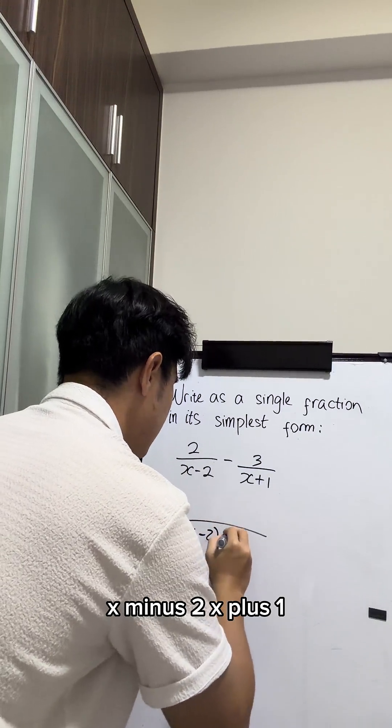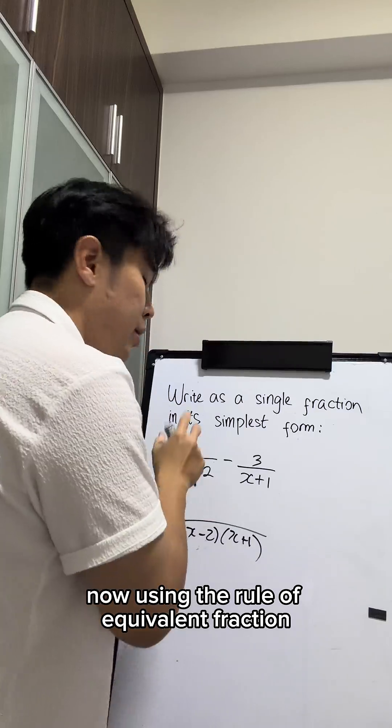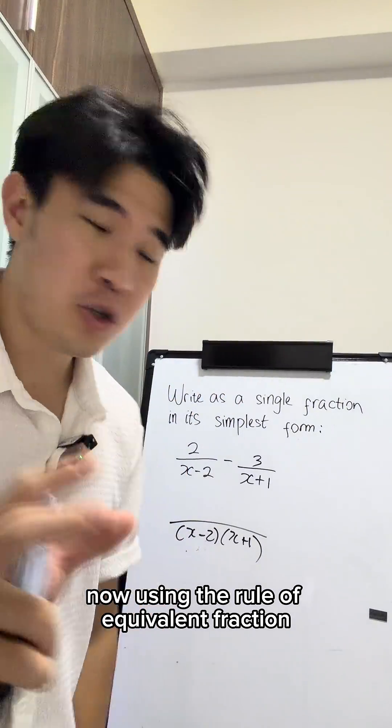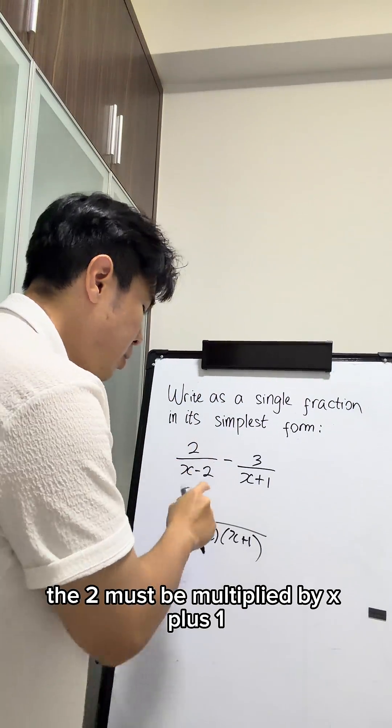x minus 2, x plus 1. Now, using the rule of equivalent fractions, the 2 must be multiplied by x plus 1.